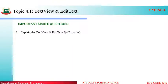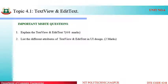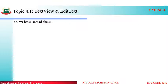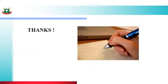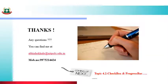The exam-related questions are: explain the text view and EditText control, and list the main or important attributes of text view and EditText. We have learnt today about what is text view and its attributes, and what is EditText and its attributes. Thanks for watching the video. In the next video, we will see different controls like checkbox and progress bar.